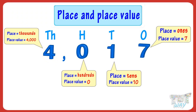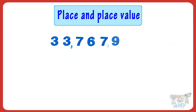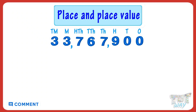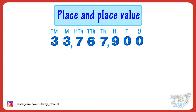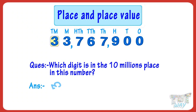So kids, now you have a fair idea of what is place and place value. Let's take one more example for practice. We have a big number: thirty-three million, seven hundred sixty-seven thousand, nine hundred. Which digit is in the ten millions place in this number? It is three.